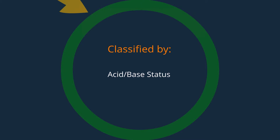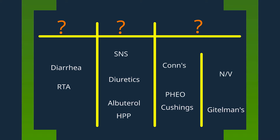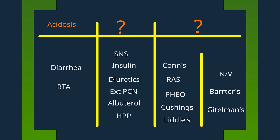Hypokalemia can be categorized by acid-base status. As the causes fill in the screen, think about what goes in what group. Column 1: acidotic causes of hypokalemia. Column 2: neutral or shift causes of hypokalemia. And column 3: alkalotic causes of hypokalemia, further divided into hypertensive hypokalemia and normotensive hypokalemia.